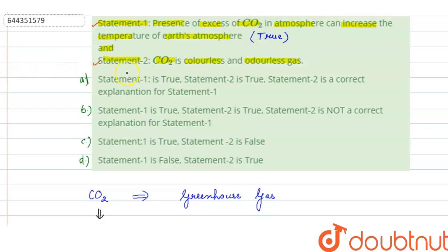Then we have Statement 2: CO2 is a colorless and odorless gas. Yes, this is true. You have to remember this, that CO2 is colorless, it has no color, and it is odorless, it has no smell. So this statement is also true.